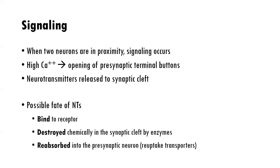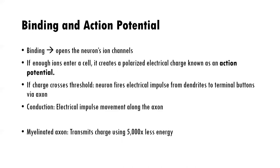There are three potential fates of neurotransmitters: some bind to receptors, some are destroyed in the cleft by enzymes, and some are reabsorbed back up into the presynaptic neuron in a process called reuptake. For the neurotransmitters that bind to receptors, what happens is an indirect process. Once neurotransmitters bind to the receptor, it's like a key to a lock — the lock opens and that door opens for ions to enter. It's the ions that cause the charge.